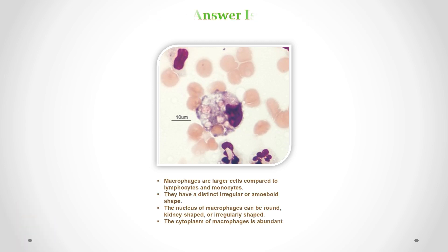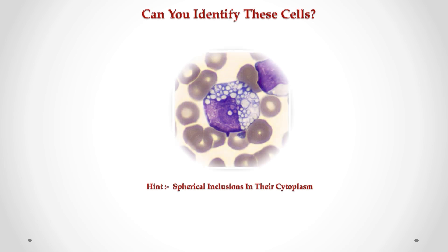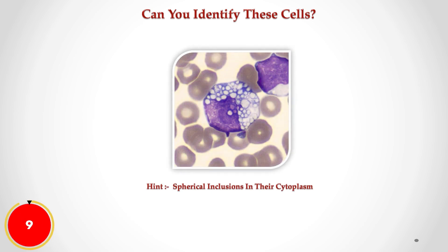Correct answer is macrophages. We can see larger cells compared to lymphocytes and monocytes. They have a distinct irregular or amoeboid shape. The nucleus of macrophages can be round, kidney-shaped, or irregularly shaped. The cytoplasm of macrophages is abundant. Can you identify these cells in CSF?